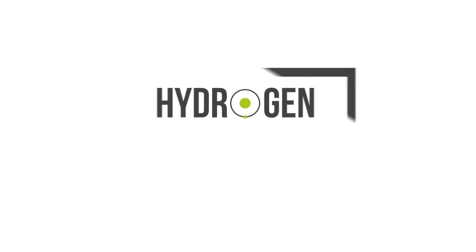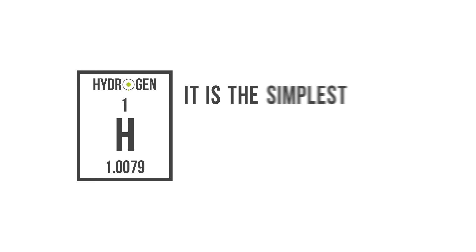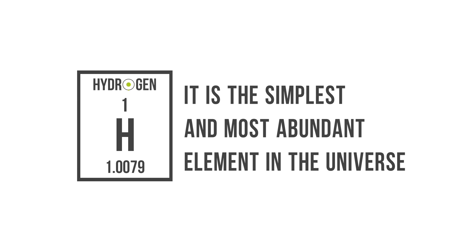Hydrogen is the first element of the periodic table consisting of one proton. It is the simplest and most abundant element in the universe.